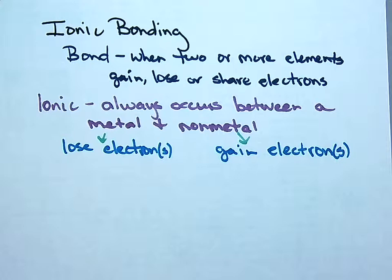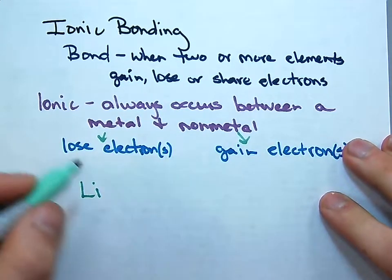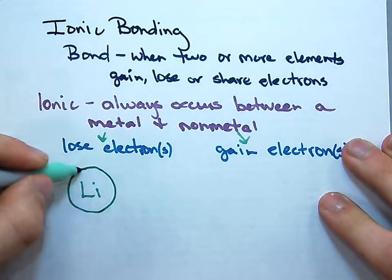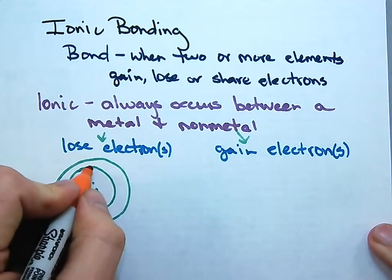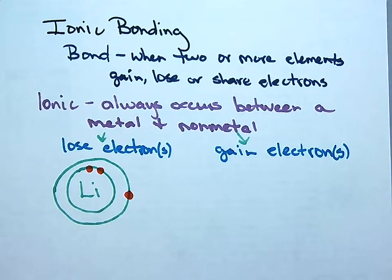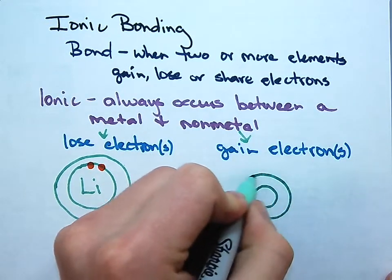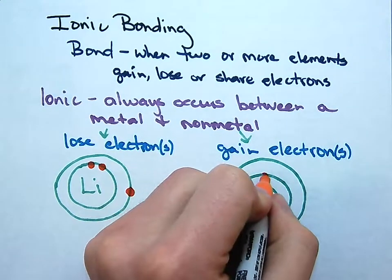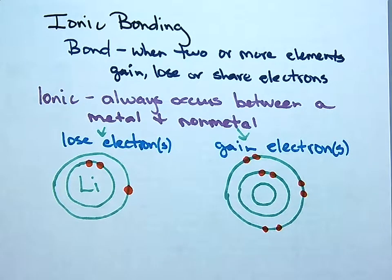Let's say I have lithium and oxygen bonding. A lithium atom has three electrons in two energy levels, because it's in period two. The innermost energy level holds two electrons, and it has three, so that leaves one. Oxygen has eight electrons, also on two energy levels since it's in period two — two in the inner level and six in the outer, so two plus six equals eight.